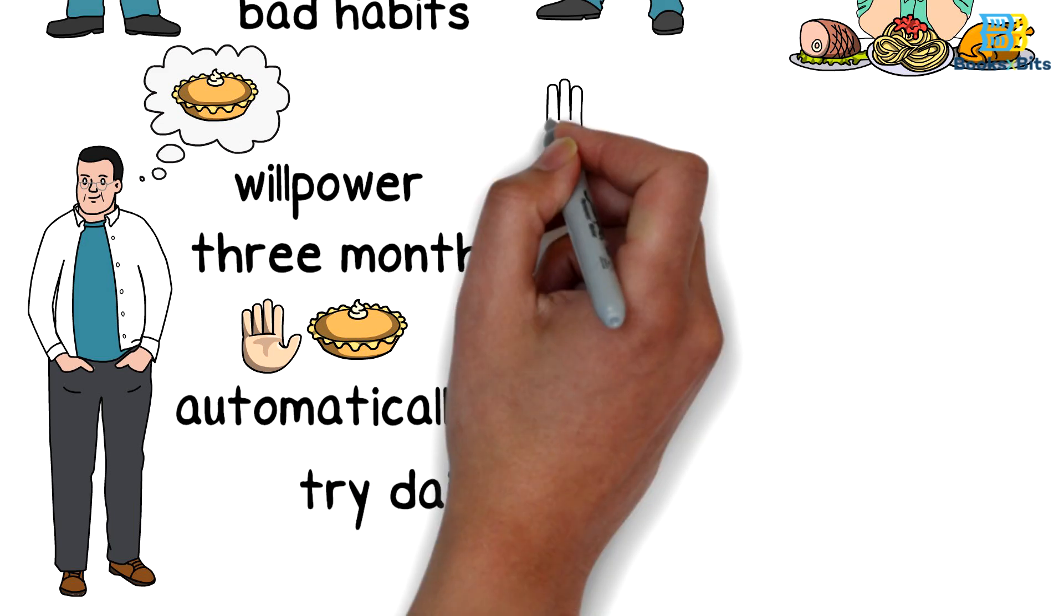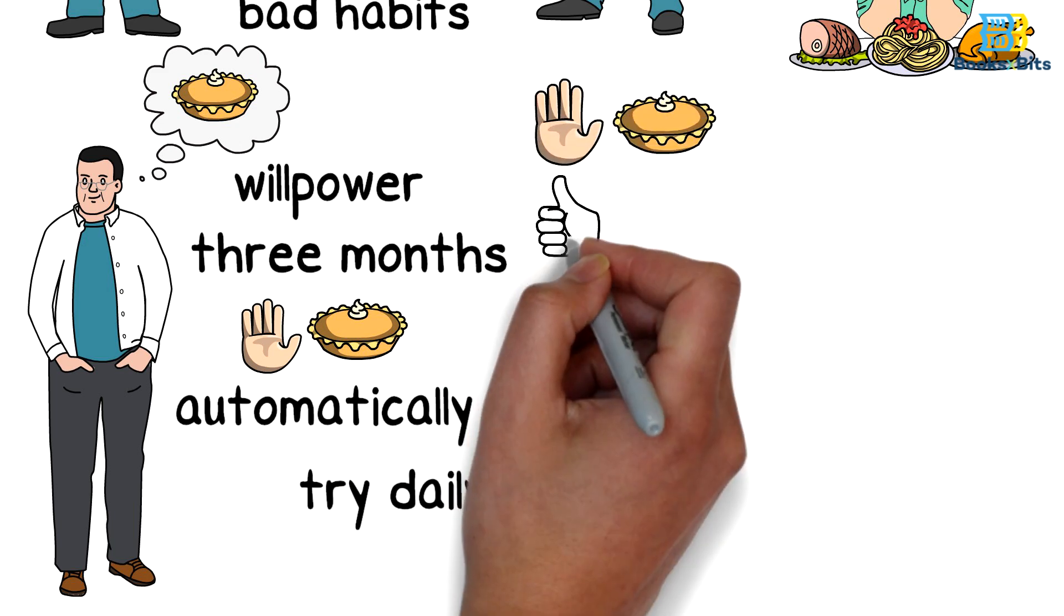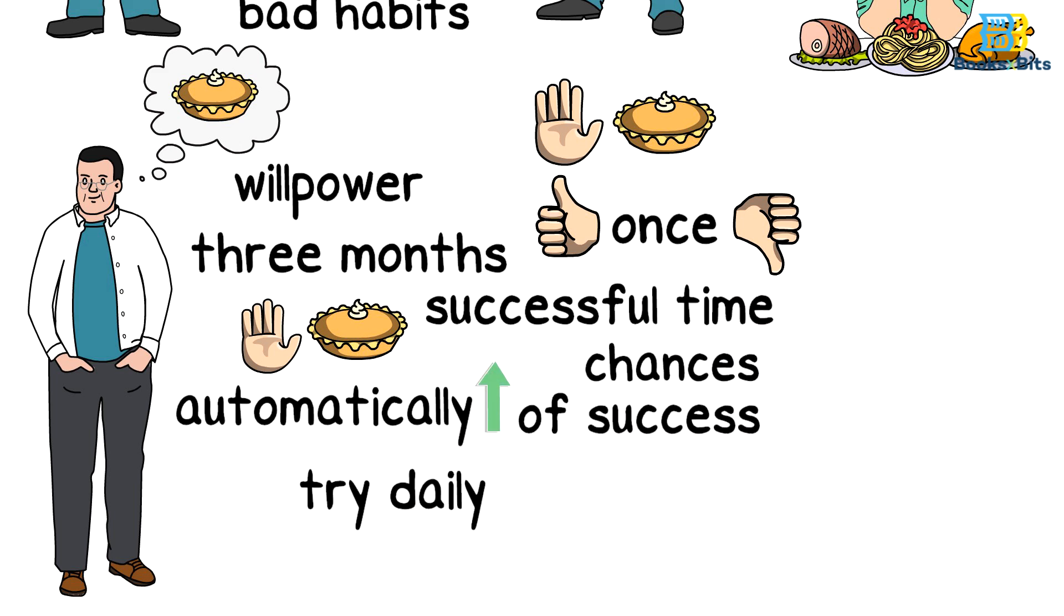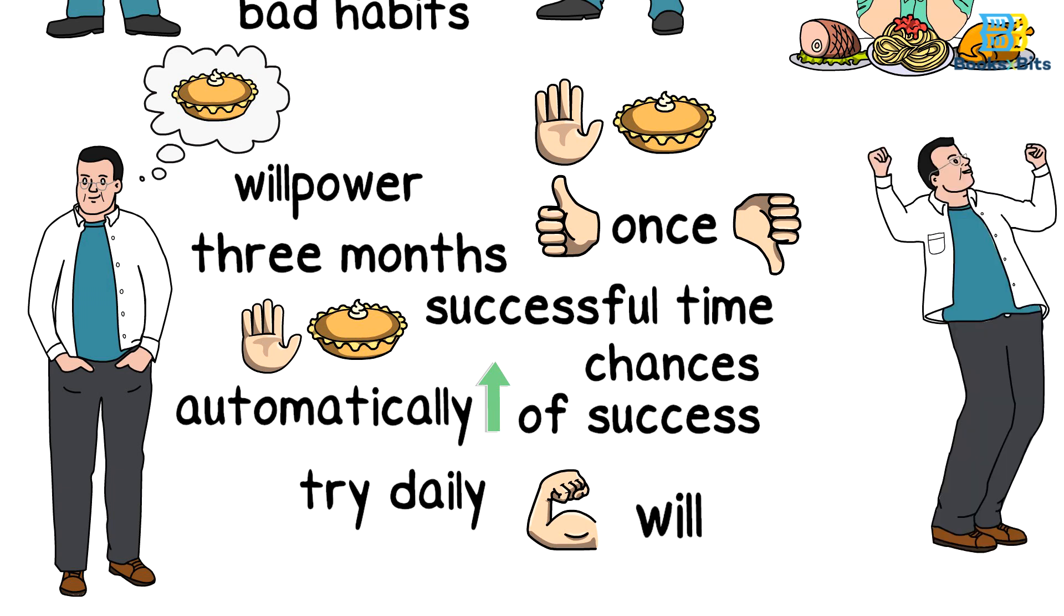Since he has to try daily to refuse unhealthy food, he will succeed once and fail once, but each successful time increases his chances of success in the future, and by strengthening his will daily over months, it becomes easy for him to stay away from unhealthy food.